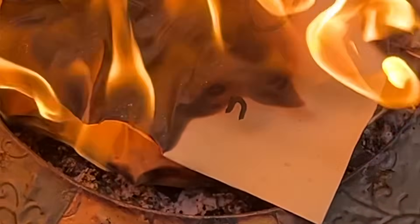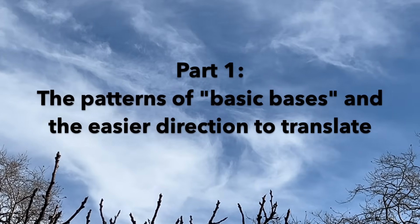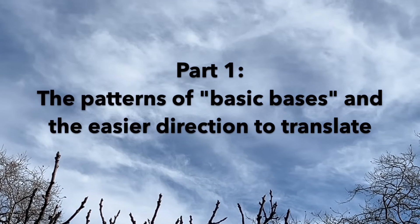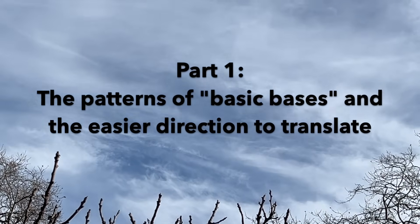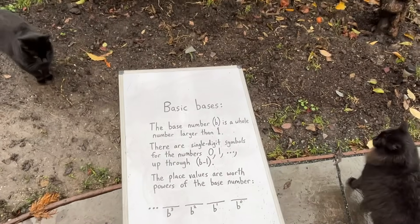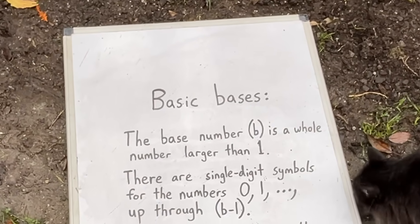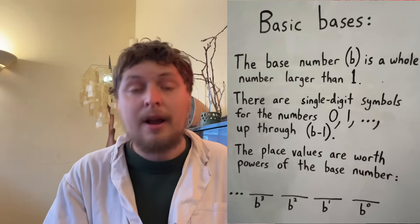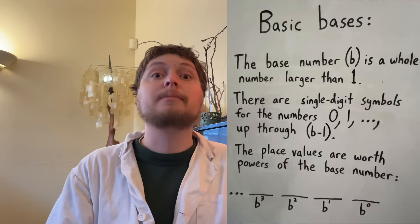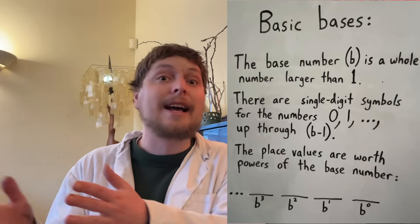The type of bases we'll be looking at are standard positional numeral systems — basically different variations of the same structure that defines base 10. Positional numeral systems each have their own language of single-digit characters and different place positions that represent different amounts. In what I call basic bases, each of the places represents a power of the base number, and the possible digits range from zero to a symbol for one less than the base number.